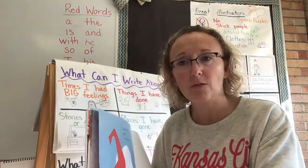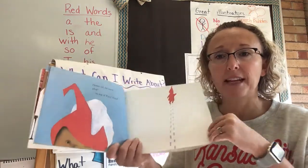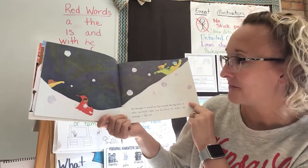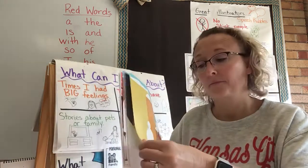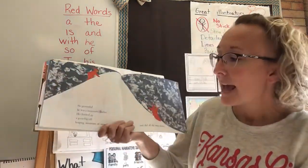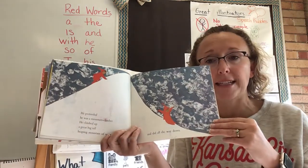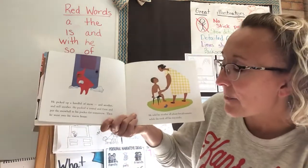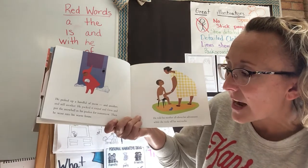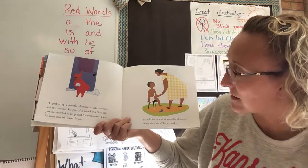Do you see how this story is so simple? It's just about a little boy playing in the snow. 'Down fell the snow — flop — on top of Peter's head.' He thought it would be fun to join the big boys in their snowball fight, but he knew he wasn't old enough — not yet. So he made a smiling snowman, and he made angels. He pretended he was a mountain climber. He climbed up a great big tall heaping mountain of snow and slid all the way down. He picked up a handful of snow, packed it round and firm, and put the snowball in his pocket for tomorrow.